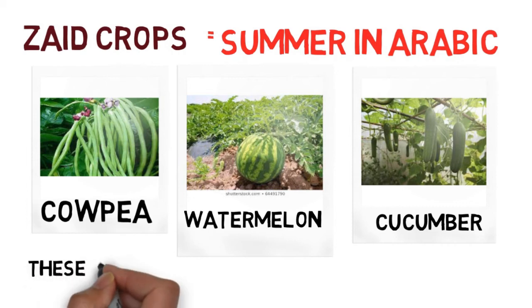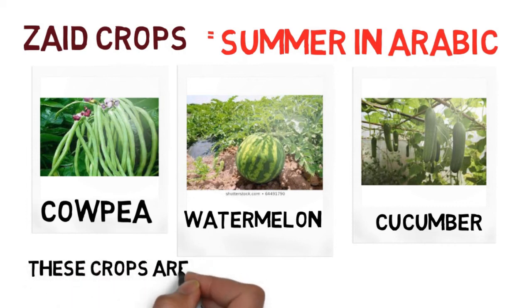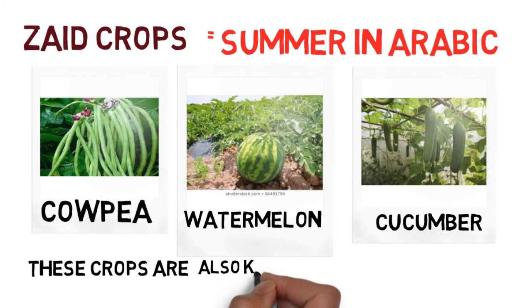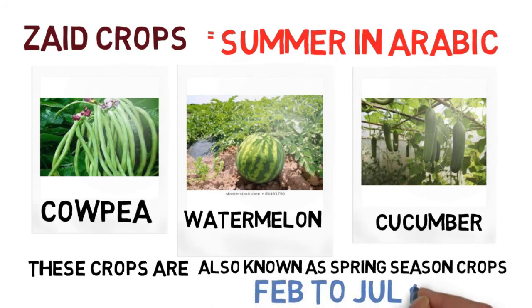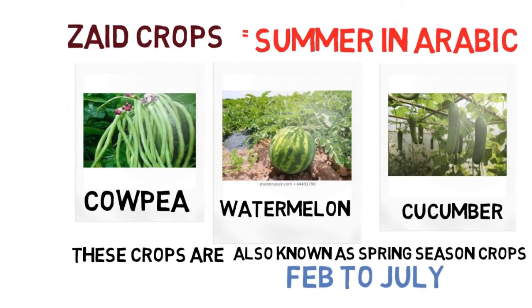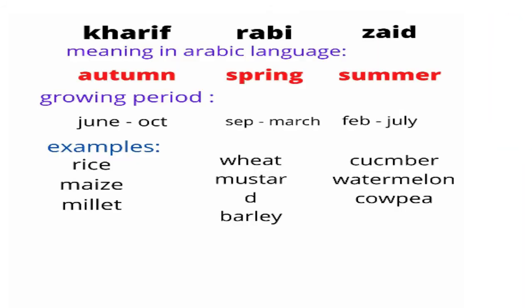They are also known as spring season crops as they are sown during the spring season. In Nepal, these crops are grown somewhere between February to July. Here is a chart for you all to quickly revise the seasonal classification of crops — please have a look at it.